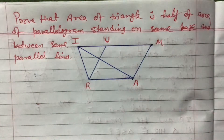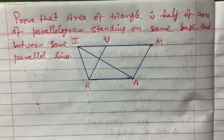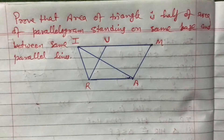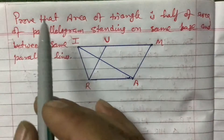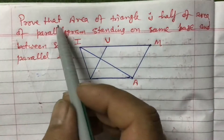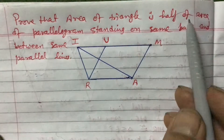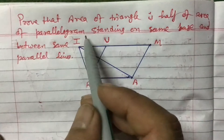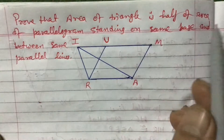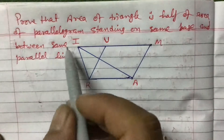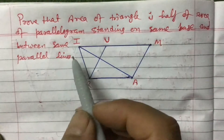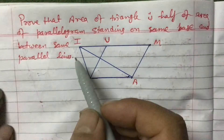Dear students, today I'm going to teach you one theorem — this is the third theorem of parallelogram. It's related to area. The question is: prove that the area of a triangle is half of the area of a parallelogram standing on the same base and between the same parallel lines.